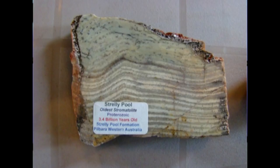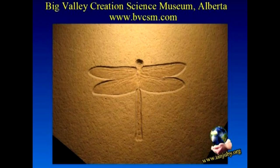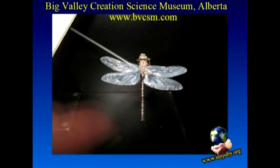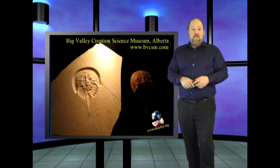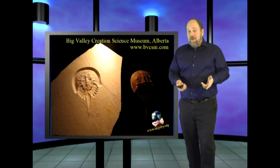An alleged 3.4 billion years of evolution has caused stromatolites to evolve into stromatolites. Dragonflies are alleged to have been around for some 300 million years. 300 million years of evolution has caused the dragonfly to evolve into the dragonfly. Horseshoe crabs have evolved into horseshoe crabs, etc.